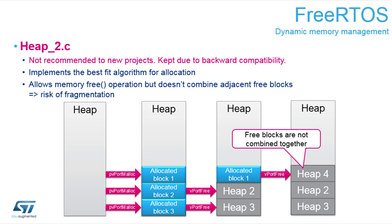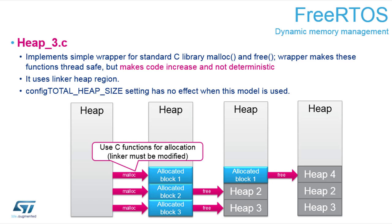Heap 2 strategy offers a very limited way of freeing blocks. You can allocate three objects, then deallocate two of them, making those two blocks available again. However even after deallocating all blocks, the memory remains fragmented into isolated blocks. You can allocate up to the maximum size of an individual block but not larger. Heap 2 is not recommended because it keeps memory very fragmented — if you fill the heap with small objects and then remove them, you can't place anything bigger.